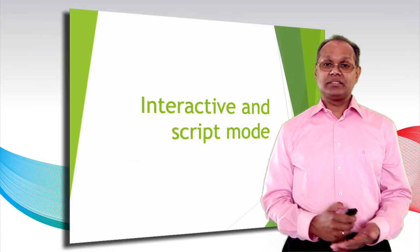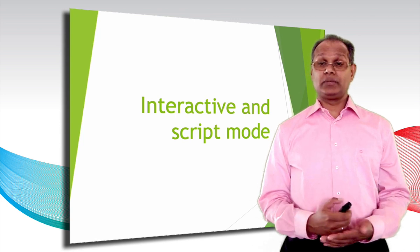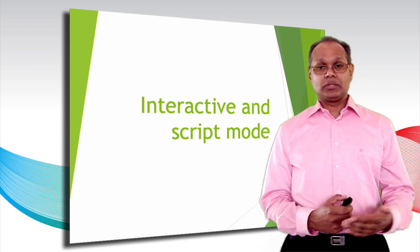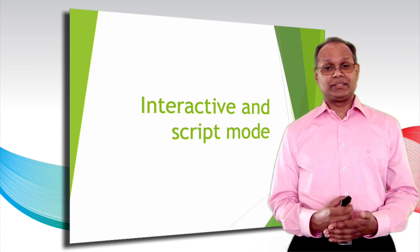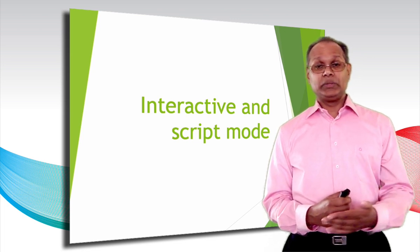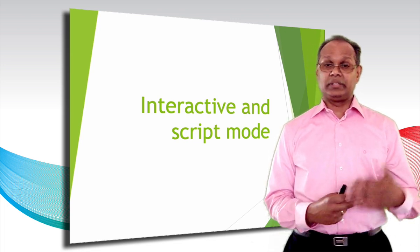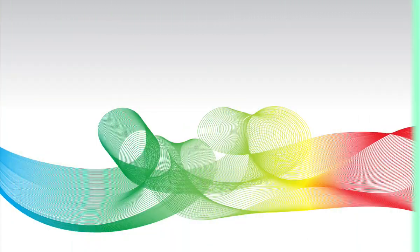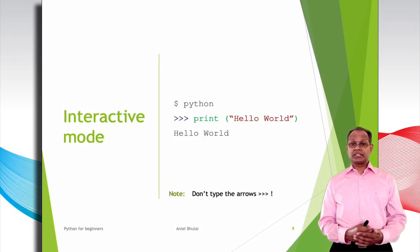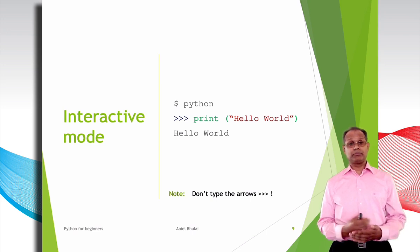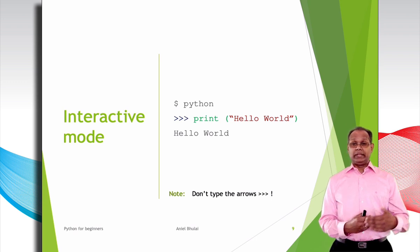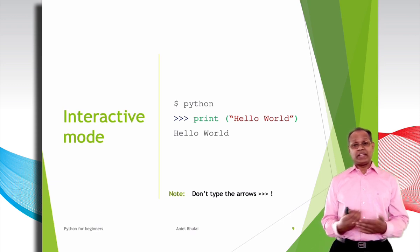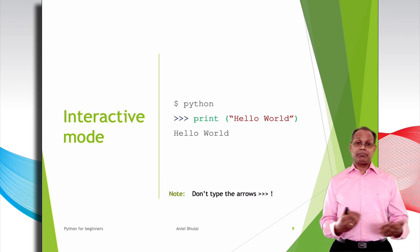Python is an interpreted programming language. The Python source code is compiled to bytecode as a PYC file, and this bytecode can be interpreted. The Python interpreter can be used in two modes: the interactive and the script mode. In the interactive mode, the Python script can be executed directly to the Python prompt without passing the script file to the interpreter. The interactive mode is useful when dealing with small pieces of code, as you can type and execute them directly at the Python prompt.